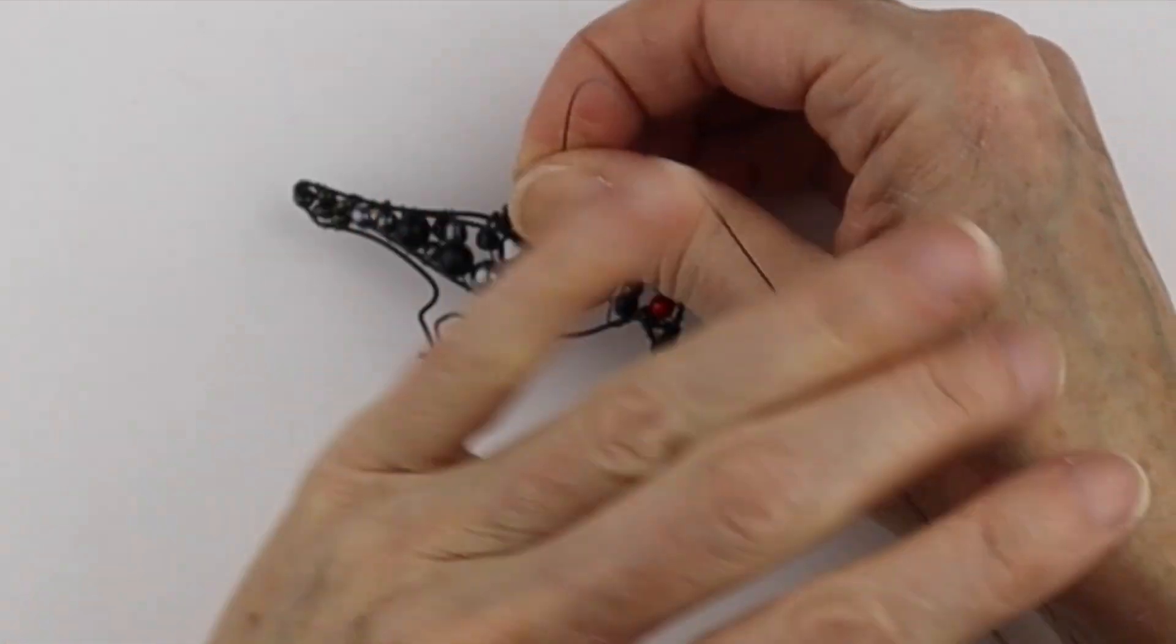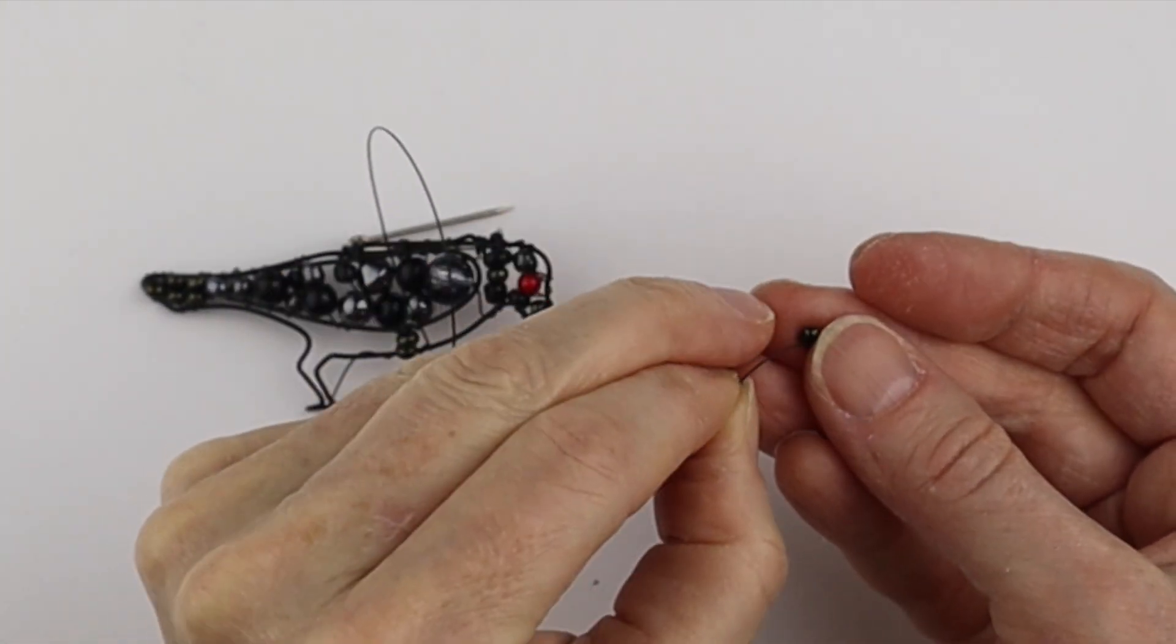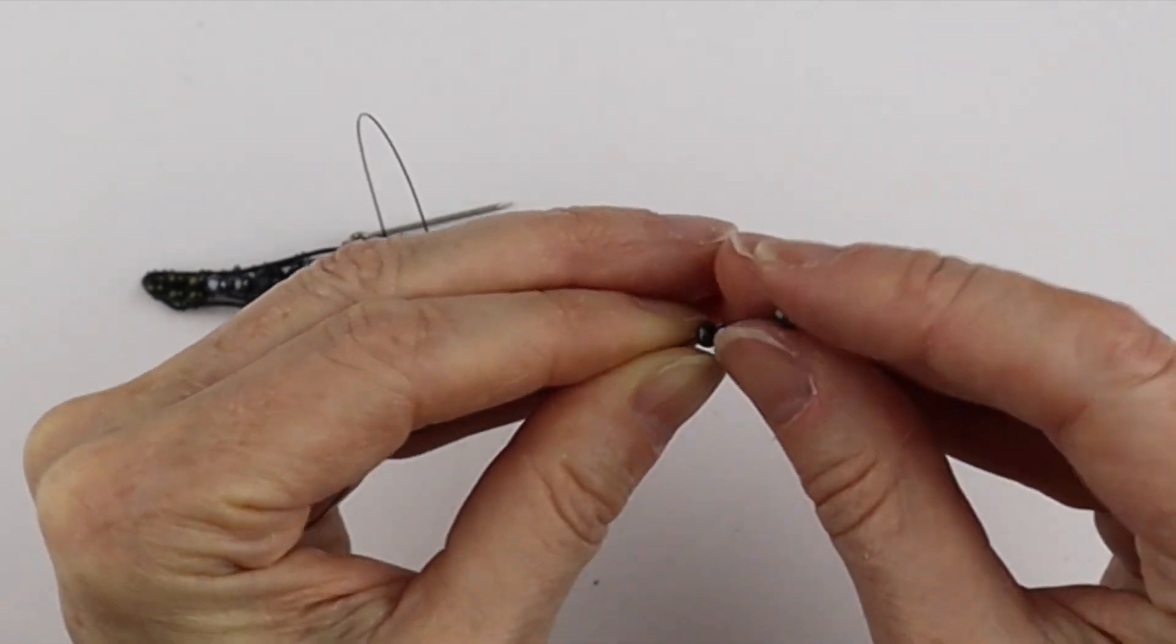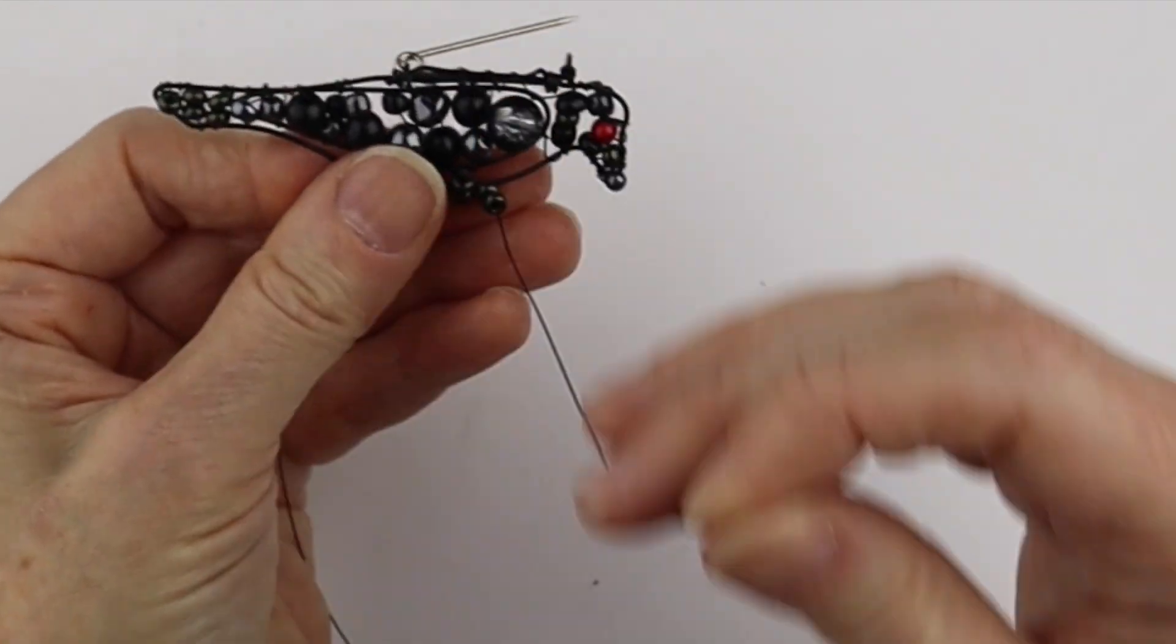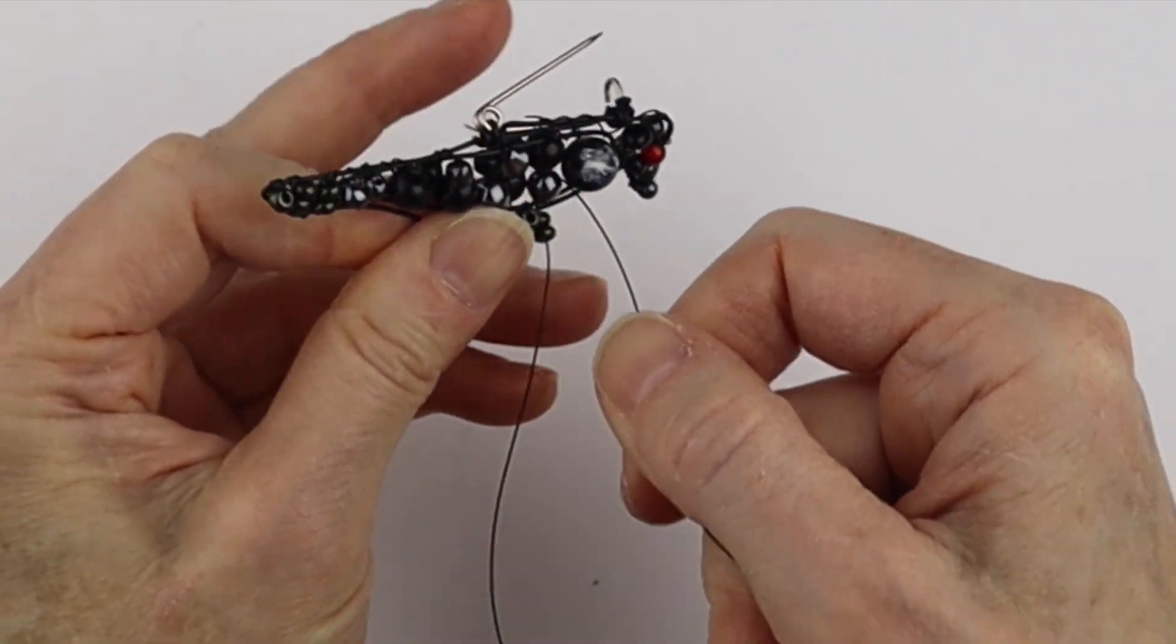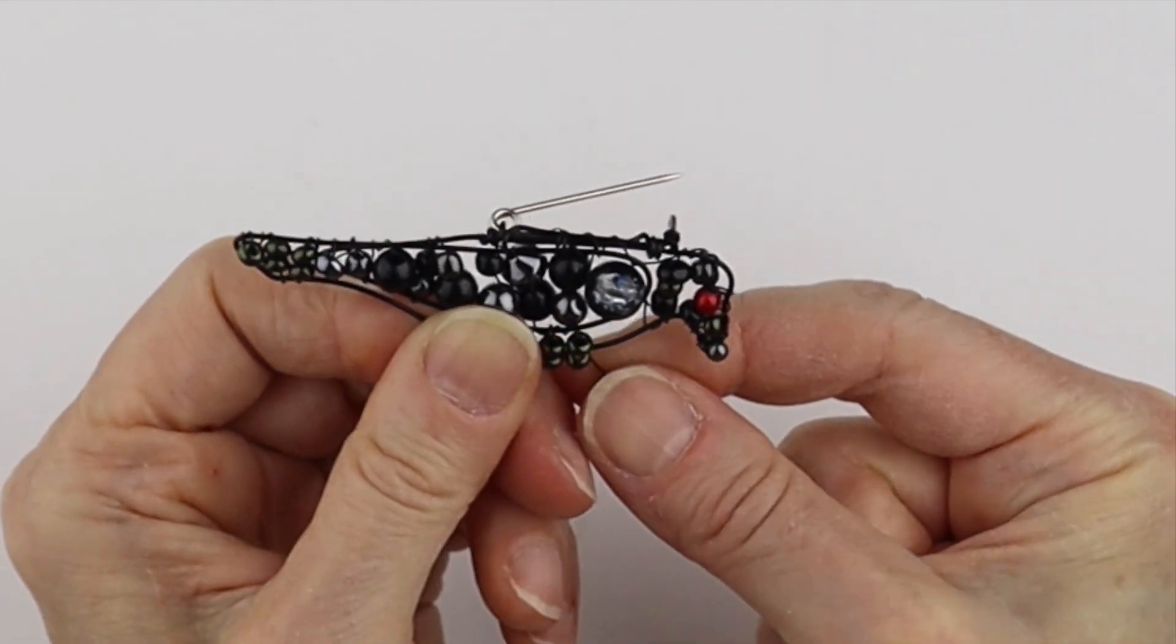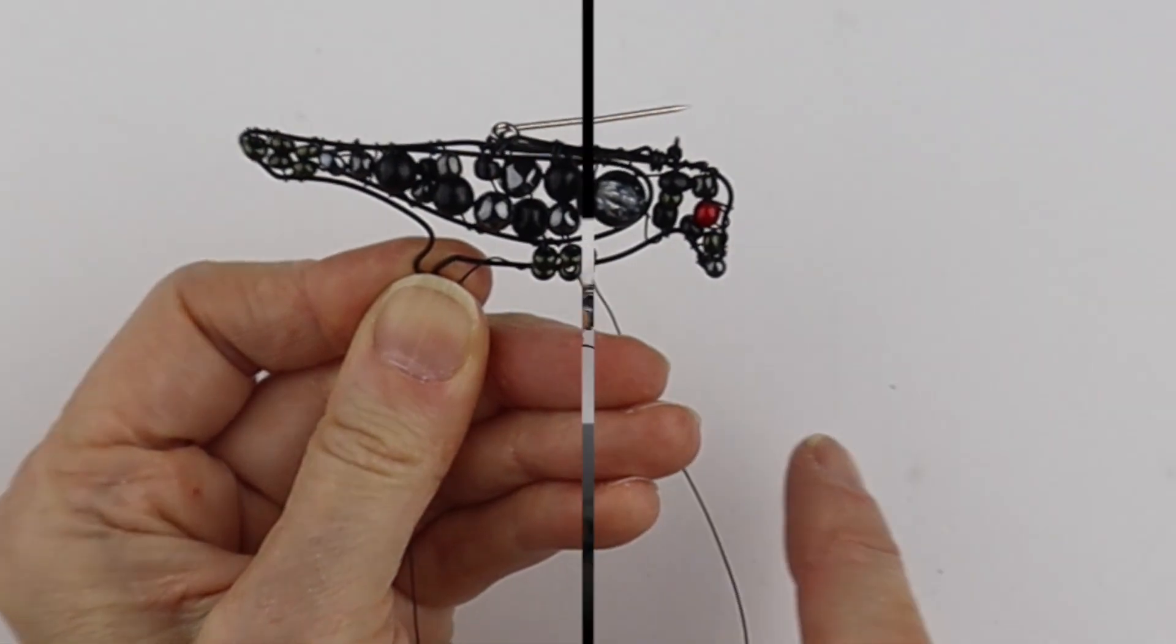Up here, put another couple for the belly of the bird. So we'll put a couple of those. These seed beads are great. They're not too big, not too small. So I'm going to hook it into the wing and we're just going to keep working our way around to fill in that area with the seed beads.